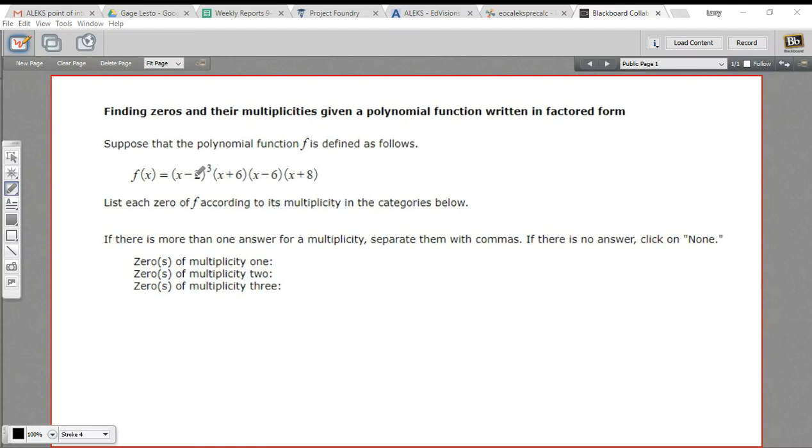In this problem, we're being asked to find the zeros of a big, complex polynomial function and give their multiplicities. Multiplicity is just a fancy word to refer to how many times something happens. So you can have a factor or a zero of an equation that comes up numerous times.